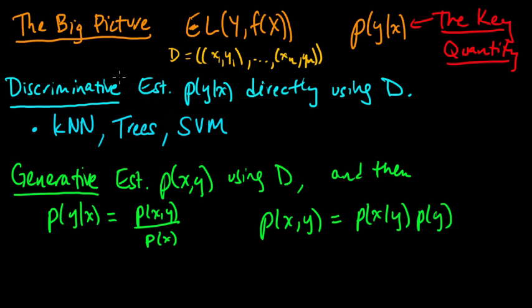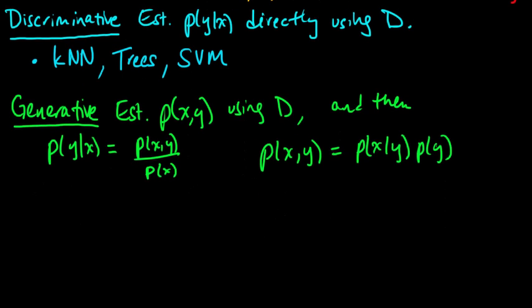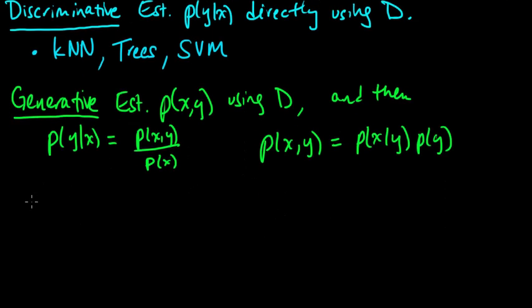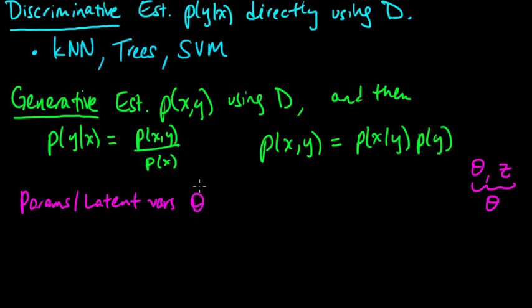So now, for both of these approaches, we'll typically have some parameters or latent variables. Latent variables are, we haven't really talked about them, but you could think about them for now as a sort of discrete form of parameters. Parameters we usually think of as continuous. Usually people use theta for parameters and z for latent variables. But I'm going to lump them all together into some theta for now, just to make things less complicated.